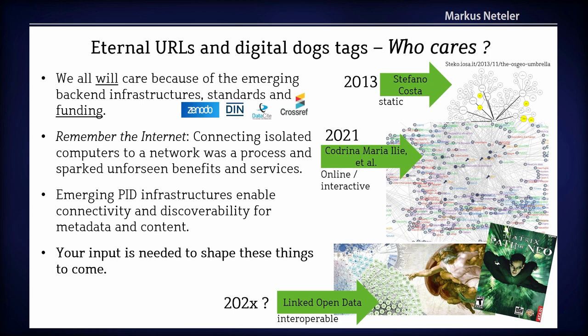We are always geo — we know our stuff. There are internal URLs and digital doc tags, but the backend infrastructures that make this possible are growing. There are players like Datasite and Crossref, and it's becoming standards like DIN — just like ISO in Europe. Remember the internet: in the 80s, home computers were not connected. Connecting those isolated computing resources to the internet was a process — took time, a learning curve — but it gave us unforeseen benefits and services. These emerging PID infrastructures enable new connectivity and discoverability for metadata and content that we haven't seen yet.